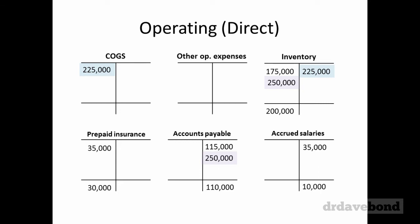Accounts payable doesn't balance yet — we'll hold on to that. We also have other operating expenses of $30,000, so debit other operating expenses $30,000. I've called it that $5,000 of prepaid insurance has been used up, which makes prepaid insurance balance out. The remaining $25,000 which needs to be a credit goes against accounts payable — we've obviously used things up and might not have paid for them up front.